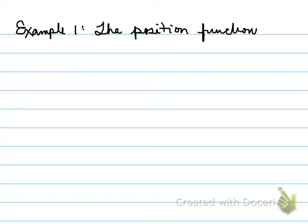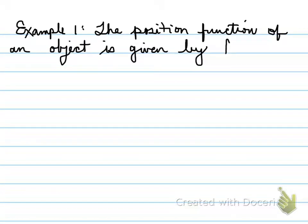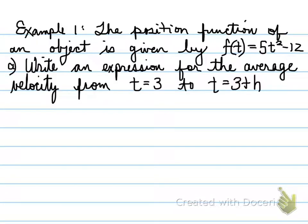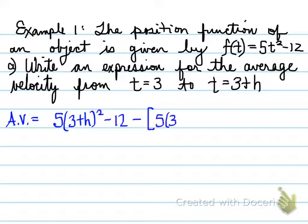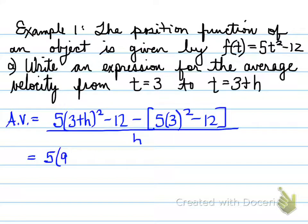Example 1. The position function of an object is given by f(t) = 5t² − 12. We need to write an expression for the average velocity from t = 3 to t = 3 + h. We use f(3 + h) minus f(3), divided by (3 + h) − 3, which simplifies to h in the denominator.